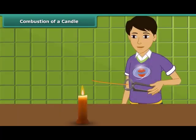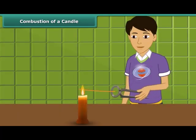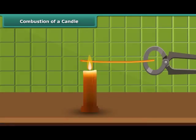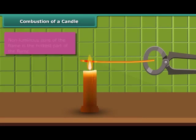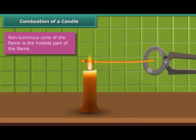Now observe another activity. Rohan is holding a thin long copper wire inside the flame with the help of a pair of tongs. The portion of the copper wire just outside the flame is getting red hot. This indicates that the non-luminous zone of the flame is the hottest part of the flame.